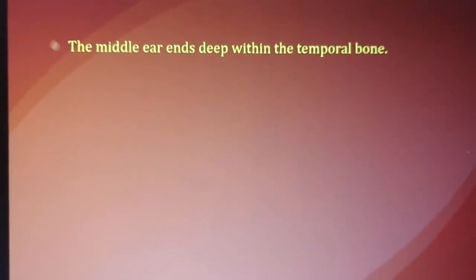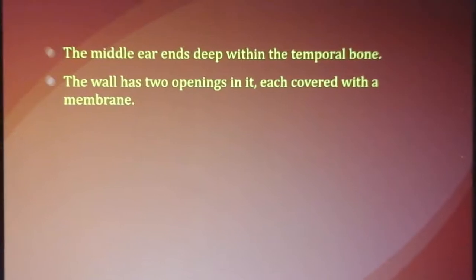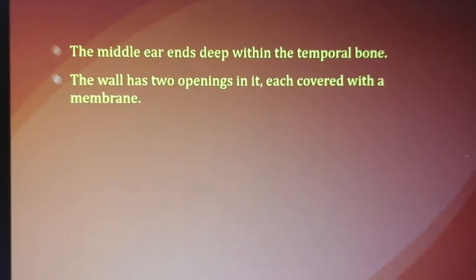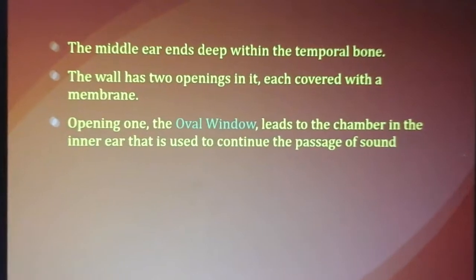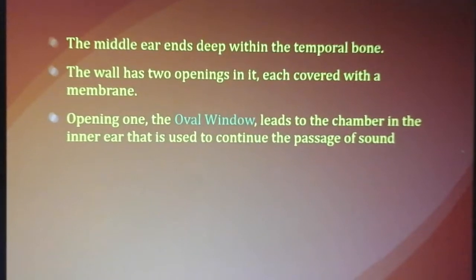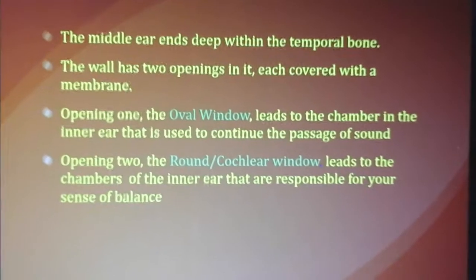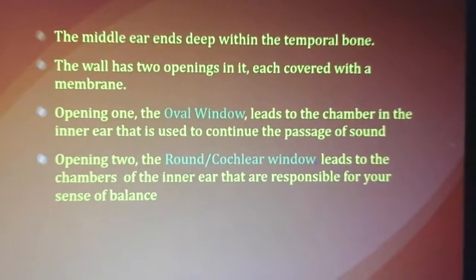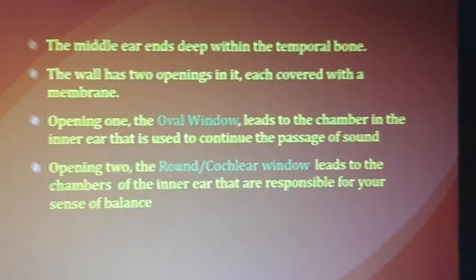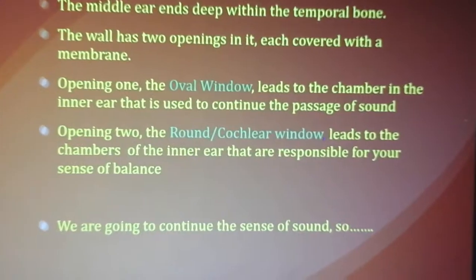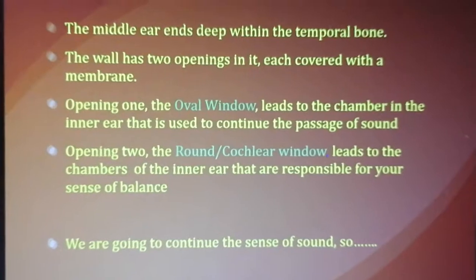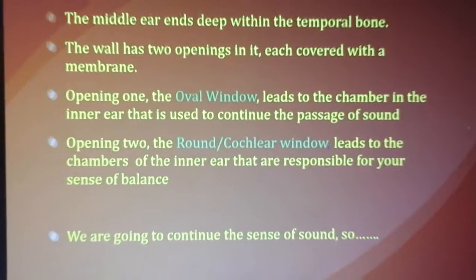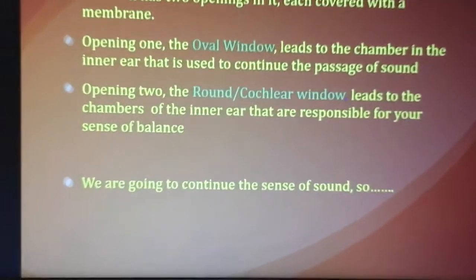The middle ear ends deep within the temporal bone, and its wall has two openings, each covered with a membrane. Opening one is the oval window — oval shaped — which leads to the inner ear chamber that continues the passage of sound. Opening two is the round window, also called the cochlear window, which leads to the chambers responsible for your sense of balance. The stapes causes the oval window to start vibrating.